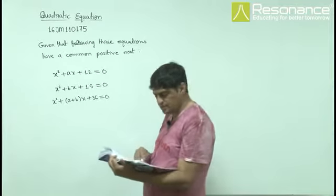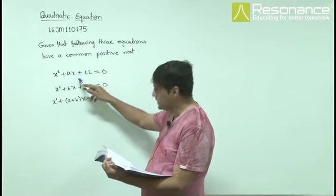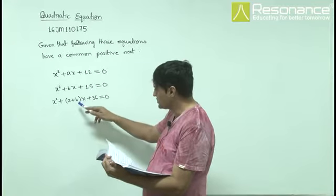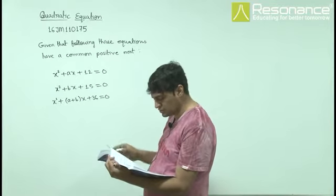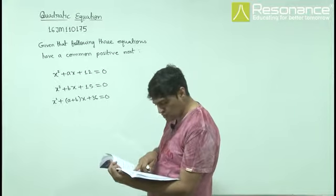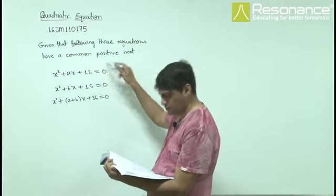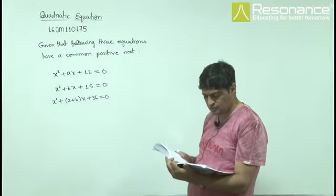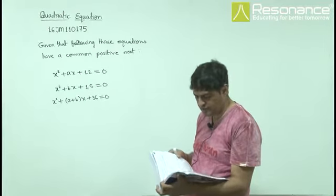In this question, we are given three equations: x² + ax + 12 = 0, x² + bx + 15 = 0, and x² + (a+b)x + 36 = 0, which have a common positive root. The options to check are: ab = 56, common positive root is 3, sum of uncommon roots is 21, etc.